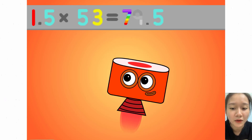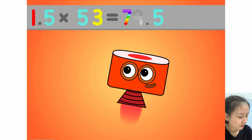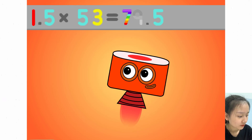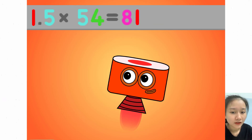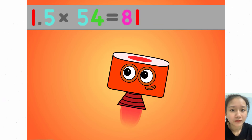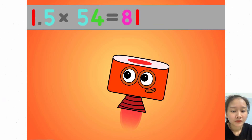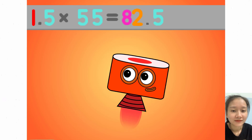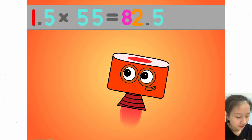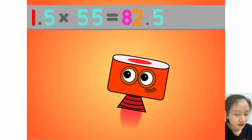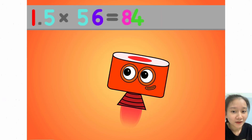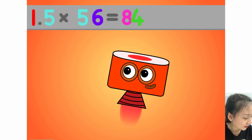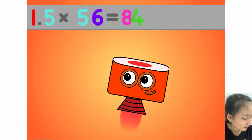1.5 times 53 equals 79.5. 1.5 times 54 equals 81. 1.5 times 55 equals 82.5. 1.5 times 56 equals 84.